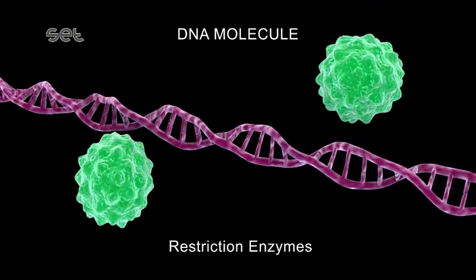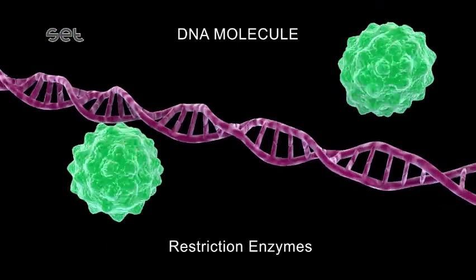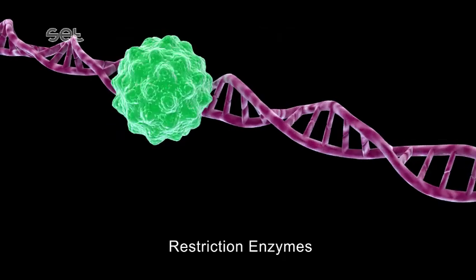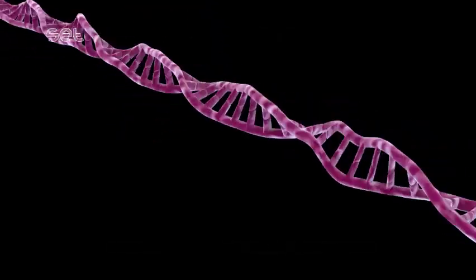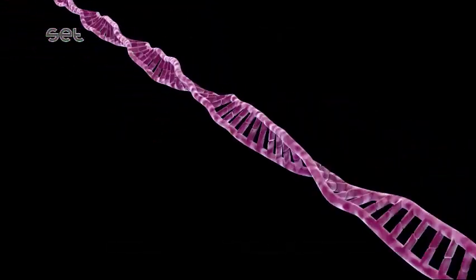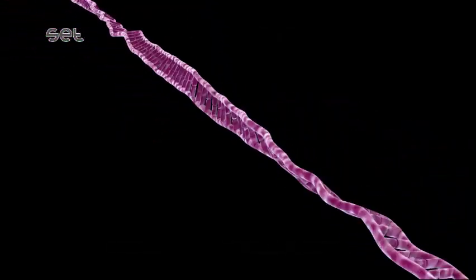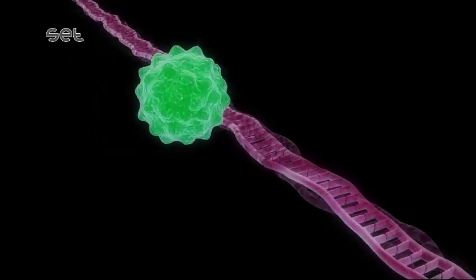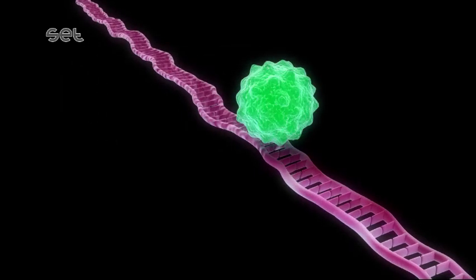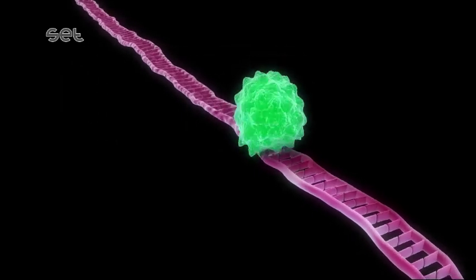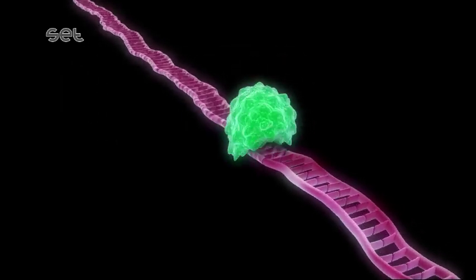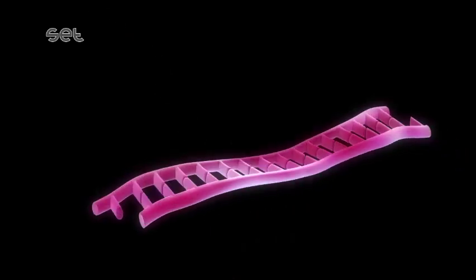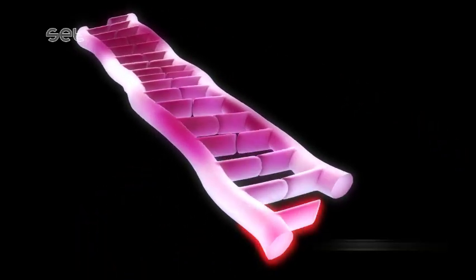One of the restriction enzymes unwinds the double-stranded DNA. The other one cuts out the gene that encodes for the production of insulin from the DNA in a way to produce sticky ends.